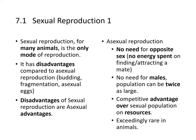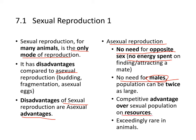What is sexual reproduction? For many animals, it's the only mode of reproduction. It has certain disadvantages compared to asexual reproduction. The advantages of asexual reproduction include no need to locate the opposite sex, no energy spent on finding or attracting a mate, no need for males, and the population can be twice as large — giving a competitive advantage over sexual populations on resources.